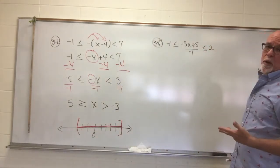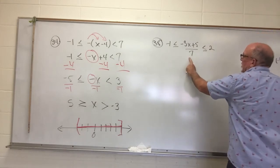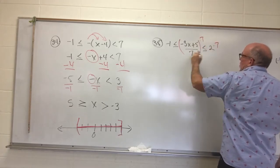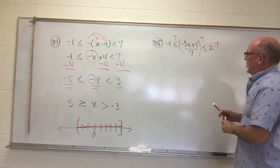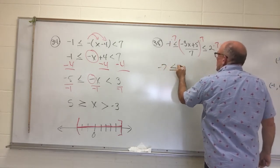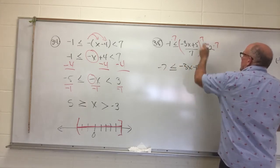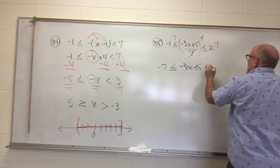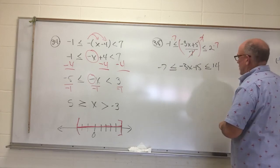All right, number 38 is going to have one additional step. First thing you've got to do is get rid of this 7. Everybody is going to have to be multiplied by the 7. All three areas, if you will. Negative 1 times 7 is negative 7. Less than or equal to a negative 3x plus 5. A 7 is canceled. That's the whole reason we did it. Less than or equal to 14. And then we go back to number 34, and we've got those steps to do.